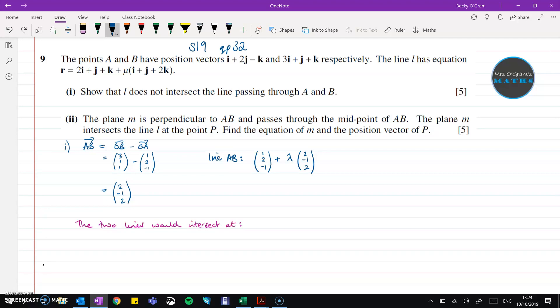Right, so the two lines would intersect when those two things are equal to each other. This one is from the equation going through AB and this one is from the line l that was given to us in the question. So the top two lines we can take out and do simultaneous equations. I'm going to subtract the bottom one from the top and that gives us, if we work that through, we get that lambda is two thirds.